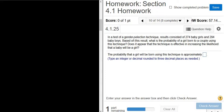In a test of a gender selection technique, results consisted of 274 baby girls. Let's write that down, 274 girls. And 294 baby boys, so 294 boys.